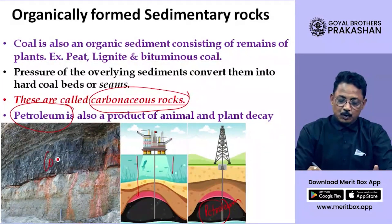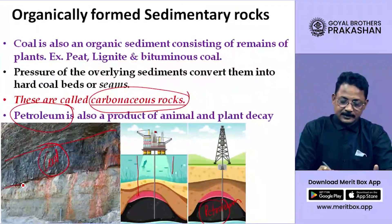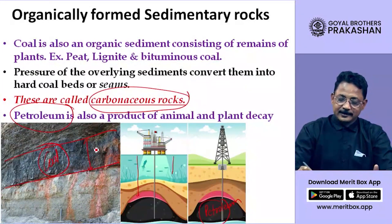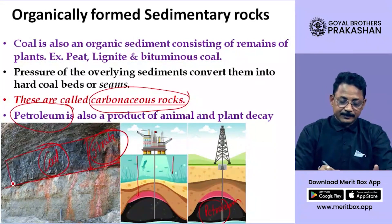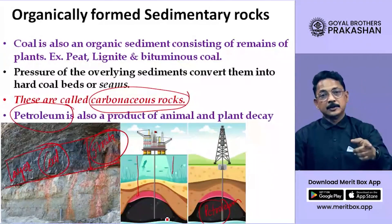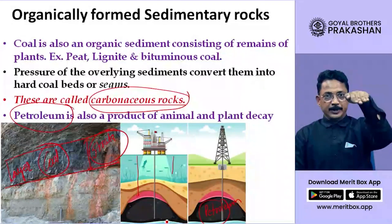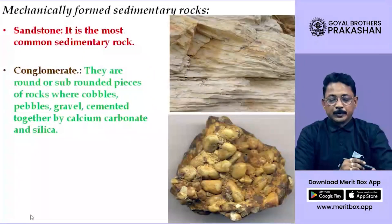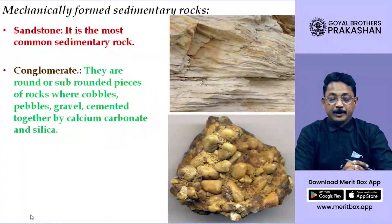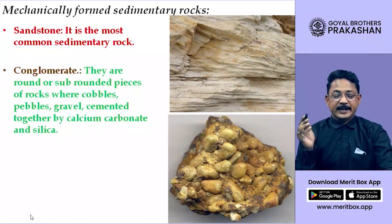Here is coal formation — you can see strata, which means layers. In this way sedimentary rocks are found in layers; coal, being an example of sedimentary rock, is also found in layers. Now, mechanically formed sedimentary rocks — mechanically means by physical or external processes.